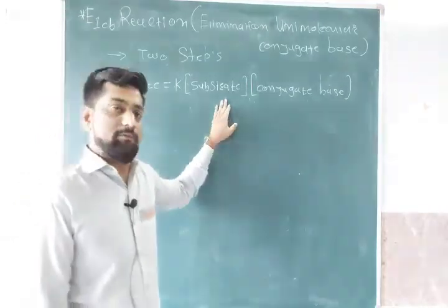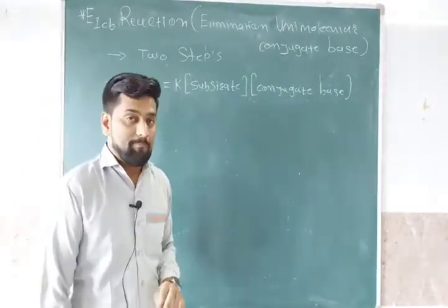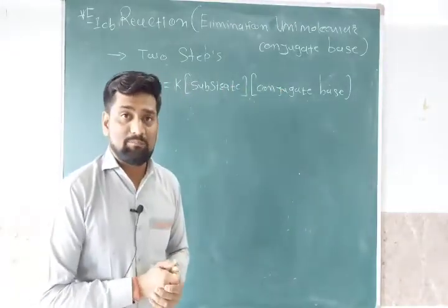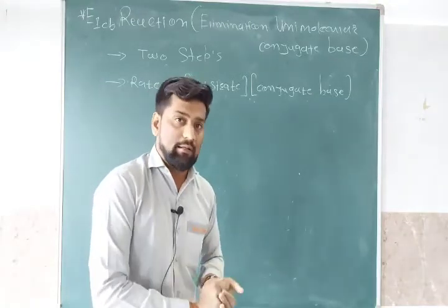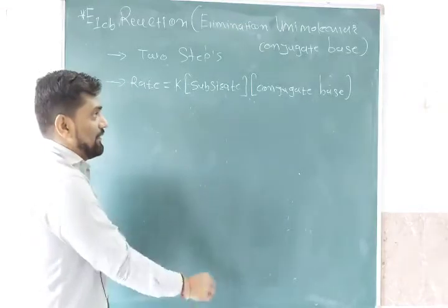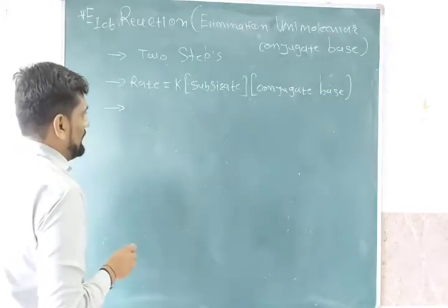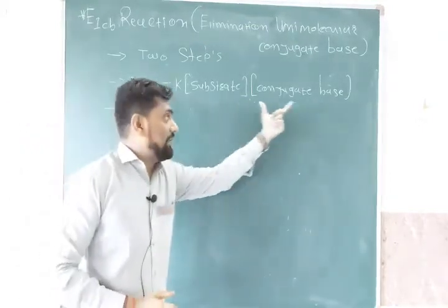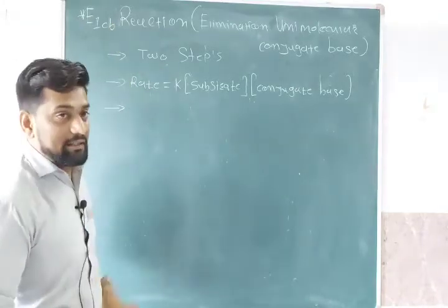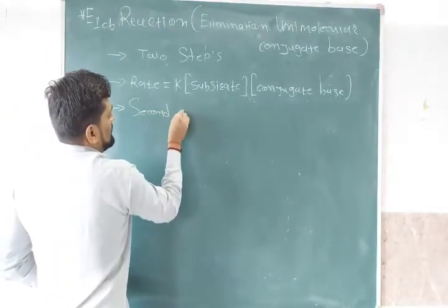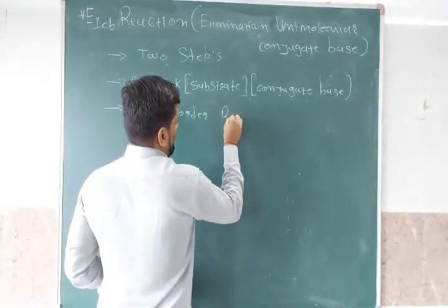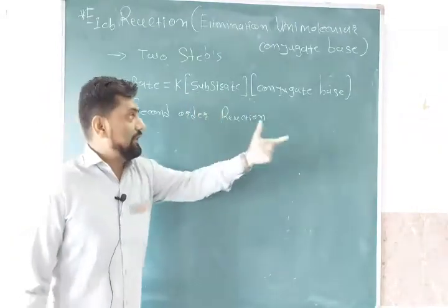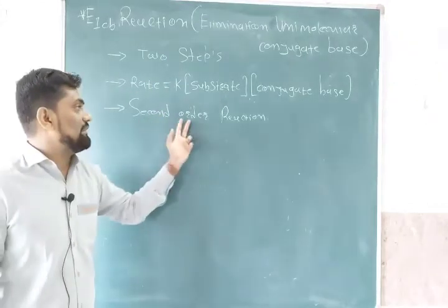This rate depends on the concentration of substrate as well as conjugate base. Here, the substrate is alkyl halide. So the first step involves concentration of substrate, and conjugate base means the carbanion form. The rate of reaction depends on the substrate as well as the conjugate base. This is a second order reaction because the rate of reaction is dependent on both substrate as well as conjugate base. That is why E1CB reaction is a second order reaction.